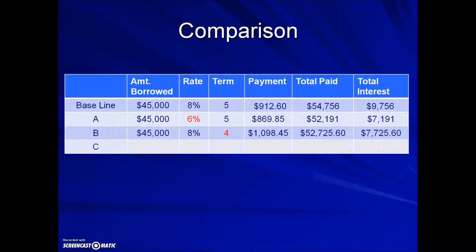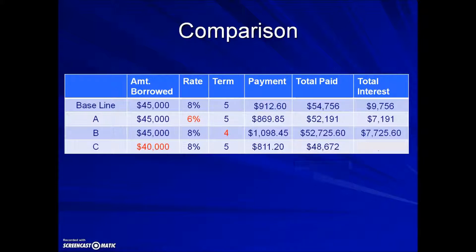Another possibility to reduce cost is to not borrow as much. Sometimes delaying a loan until you have a larger down payment is an option, which ultimately reduces your loan cost. Keeping the rate and term the same as the baseline, this third option reduces the amount borrowed. If you guessed the monthly payment is less — and in this case it's virtually a hundred dollars less per month — then no surprise that the total amount paid over five years is smaller, and the total interest is a reduced cost compared to the baseline.